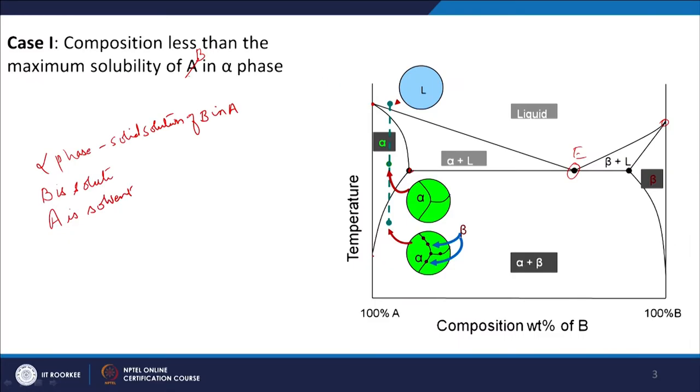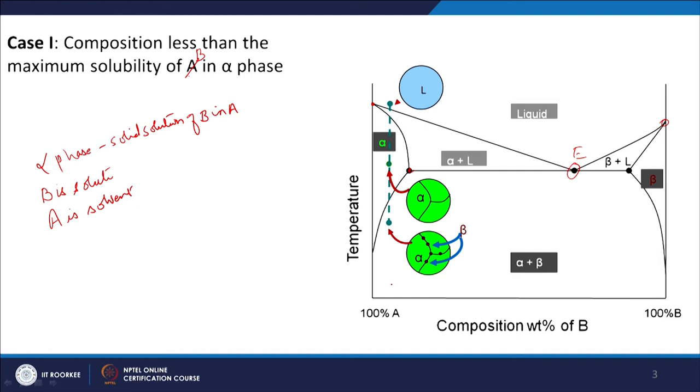When we say 'phase,' it is not a pure element — pure A is pure A, but if you add anything it will be a new phase, and we have to define what constituents are in that phase. For alpha phase, you can see that the solubility of B is varying as a function of temperature. We want to have a composition C₀ which is lower than the maximum solubility of B in alpha phase. We start with a liquid phase — the material is heated to a temperature above the liquidus line, so the whole system is in liquid phase, and from there we start cooling down.